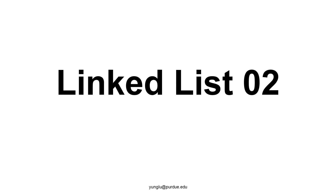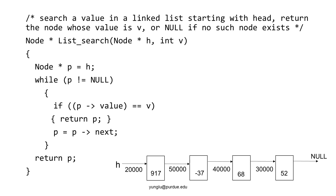This is the second lecture on linked lists. This lecture focuses on the search function. The search function takes two arguments: the head of the linked list and a value to be searched. If this value is stored in the linked list, the function returns a pointer to the node that stores the value. If the value is not stored in the linked list, the function returns null. If several nodes store this value, the function returns the first one.